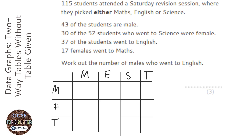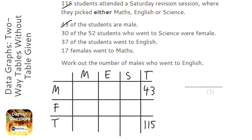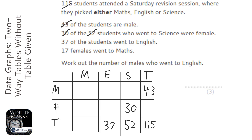So let's try and fill in our two-way table. We've got 115 students in total. 43 of the students are male, so all of the males added together is 43. 30 of the 52 students who went to science were female — so there are 52 students in total who go to science, and 30 of them are female. 37 of the students went to English, so 37 in total went to English. And 17 females went to maths. You might have your columns ordered differently — maths, English, science or English, maths, science — it doesn't matter, you'll get the same answer.